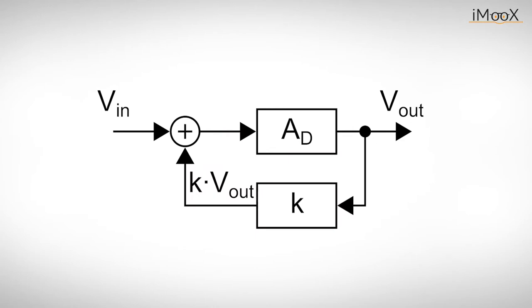Positive feedback means that a portion of the output voltage is added to the input voltage. To see what happens, we consider a loop like this one. We assume that all voltages are zero volts. The differential gain A_D is 2 and the feedback coefficient k is 1. So zero is added to zero and nothing is happening right now.